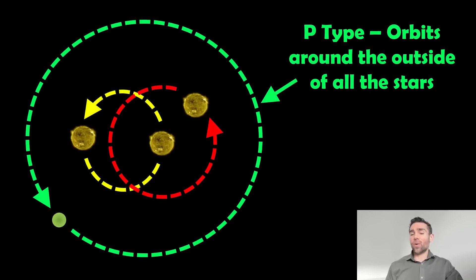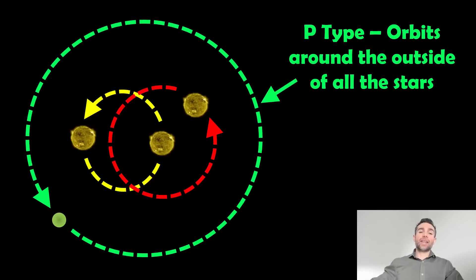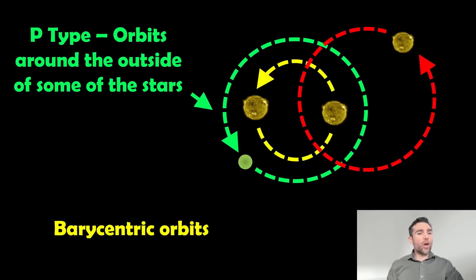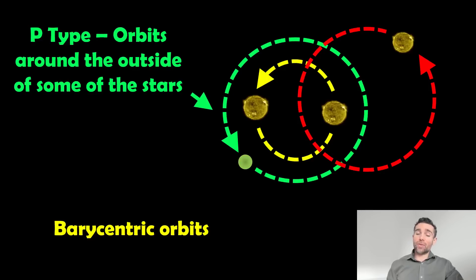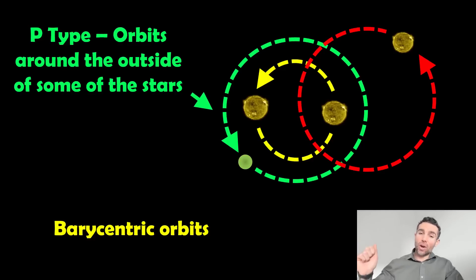So what sort of orbits can they have? They can still have P-type, where the planet orbits around the outside of all three stars orbiting a common centre of mass. But you can also have a P-type orbit where it goes around the outside of just some of the stars — this is a barycentric orbit, where the planet orbits the barycentre of the system, which is the centre of mass. So P-type orbits are barycentric orbits — they don't necessarily have to go around the outside of all stars, just around the common centre of mass of the whole system.